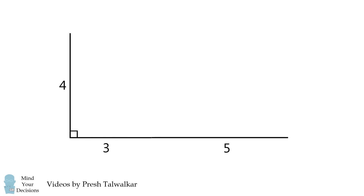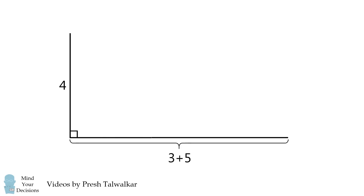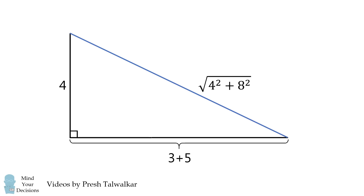We have a right triangle where one leg is 4, and the other leg is 3 plus 5, which equals 8. We can solve for its hypotenuse as the square root of the sum of the squares of its sides. This will be the square root of 4 squared plus 8 squared.